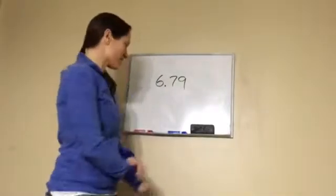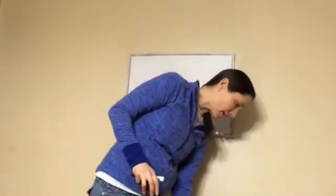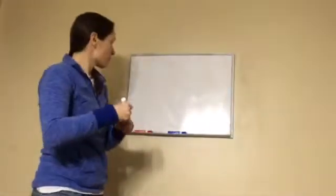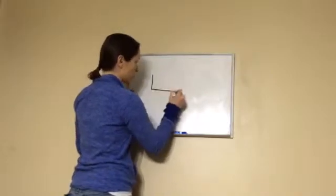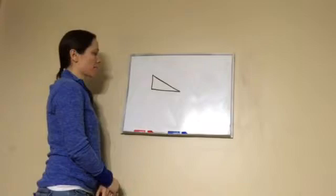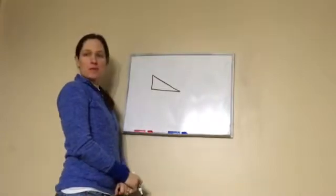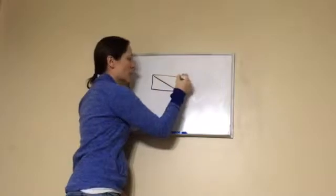Okay, sixth grade lesson 79. This is on the area of a triangle. Now I want you to draw a triangle on your piece of paper just like this. Okay, now what if I drew another triangle on top of that?